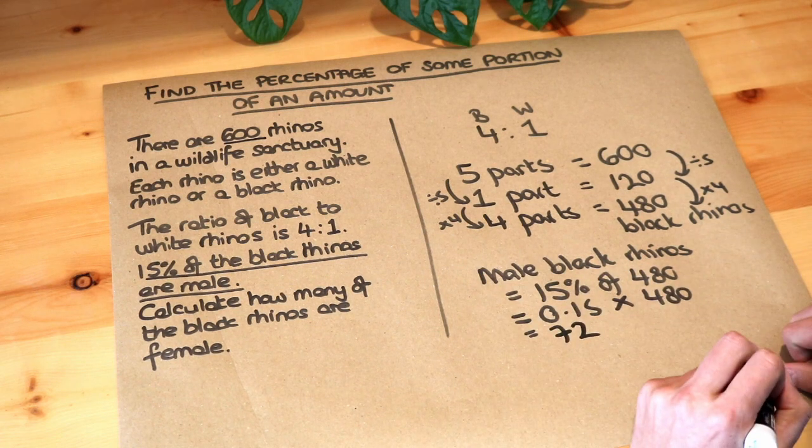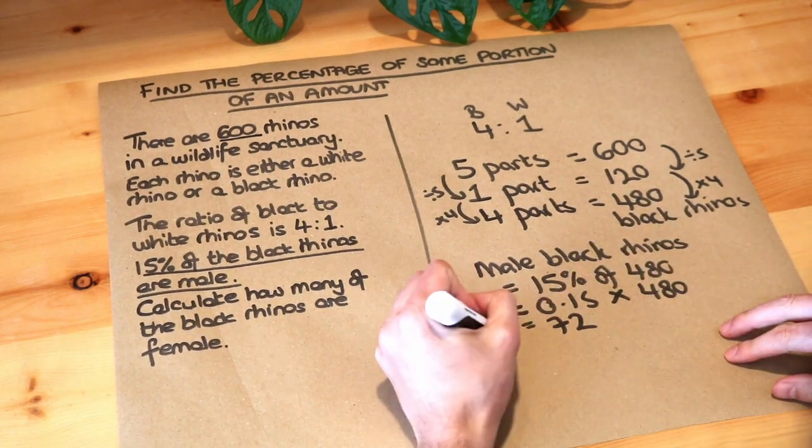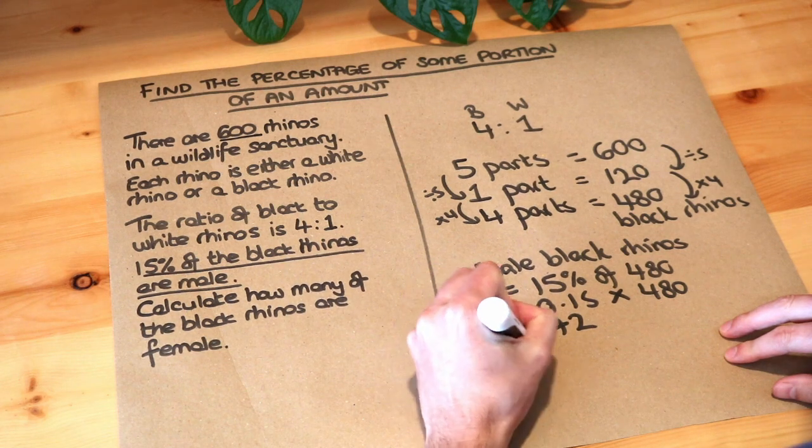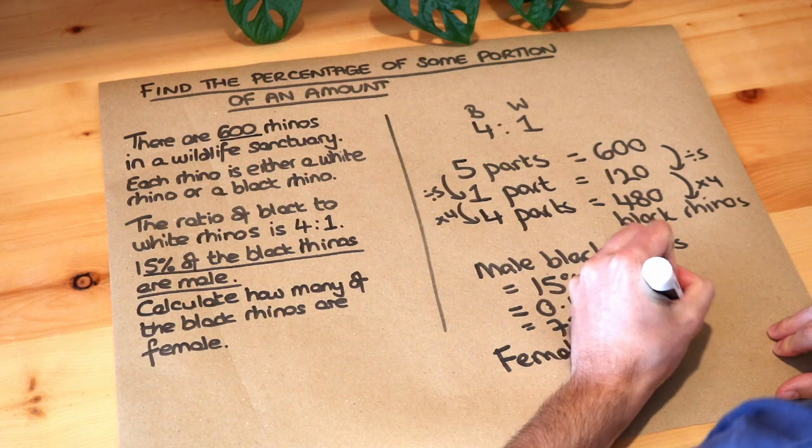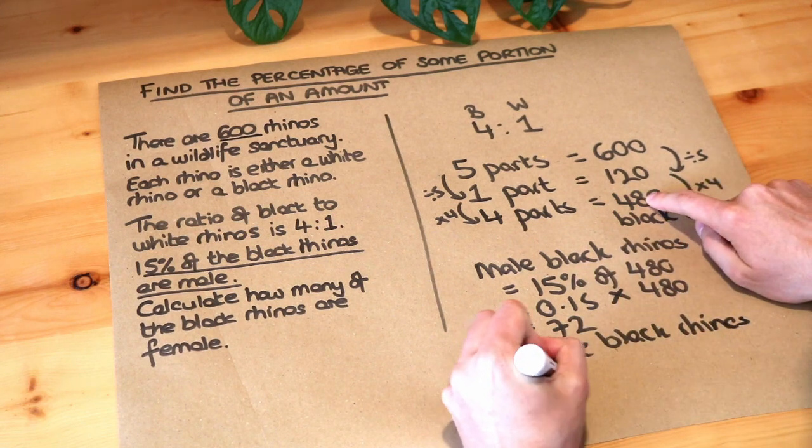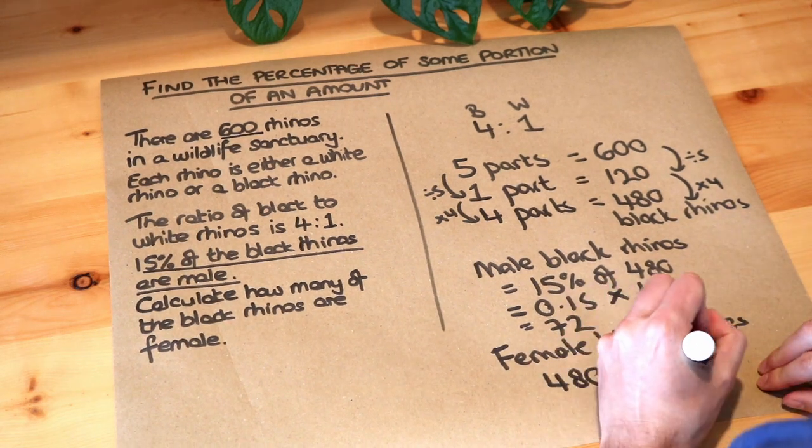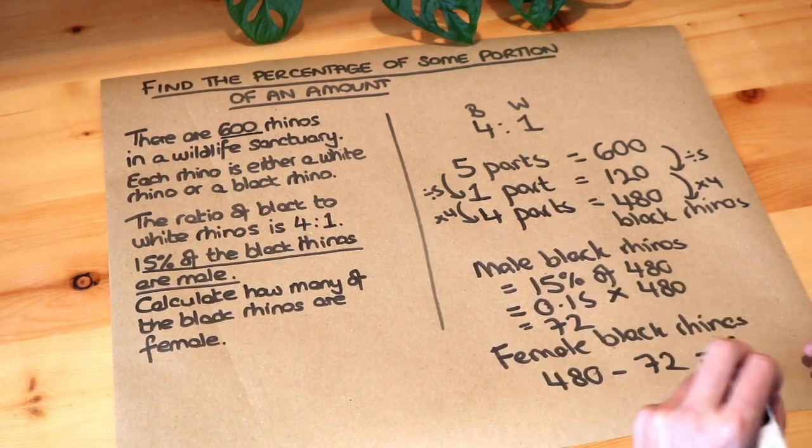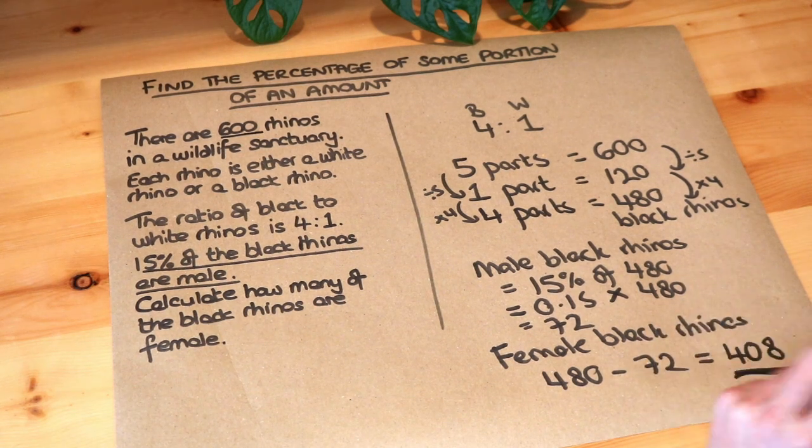So 72 male black rhinos, but there's 480 black rhinos in total. So therefore the female black rhinos, it's just the rest of those black rhinos. So the 480 total black rhinos, subtract the 72 male black rhinos. I don't need my calculator for that. That's just 408. So that is the final answer.